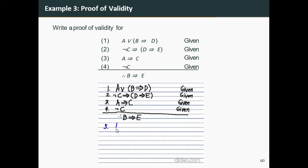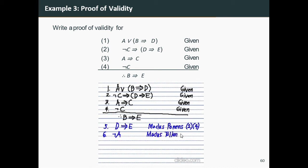Looking at statement four and statement two, we can use modus ponens to conclude d implies e. Modus ponens is applied on statements two and four. Next, using statement four and statement three, we can conclude not a. The reason is modus ponens applied on statements three and four.